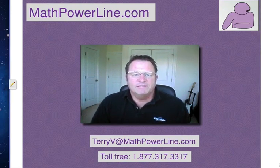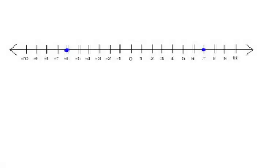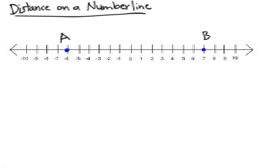Alright, let's go to today's lesson. This video involves finding the distance between two points on a number line. Here I'm showing point A at negative 6, and B has a coordinate of positive 7.